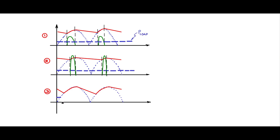Likewise, in case three, for the same average power, we have consciously increased the current conduction time, and the current peaks will be much lower. So this is the concept we will use in passive power factor improvement: increasing the current conduction time at the expense of more ripple, thereby reducing current peaks and making it closer to the full conduction of a pure resistive load.